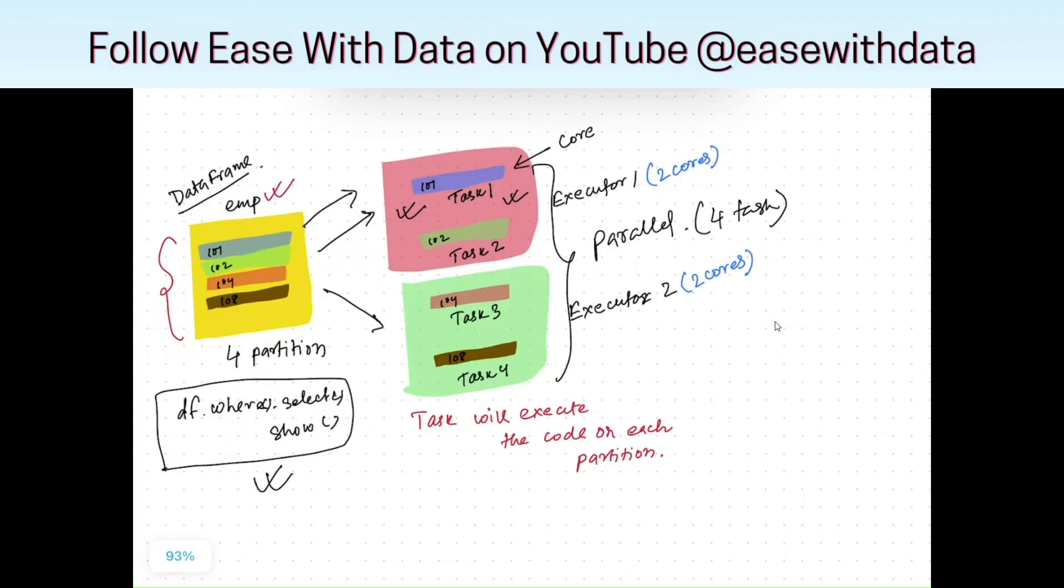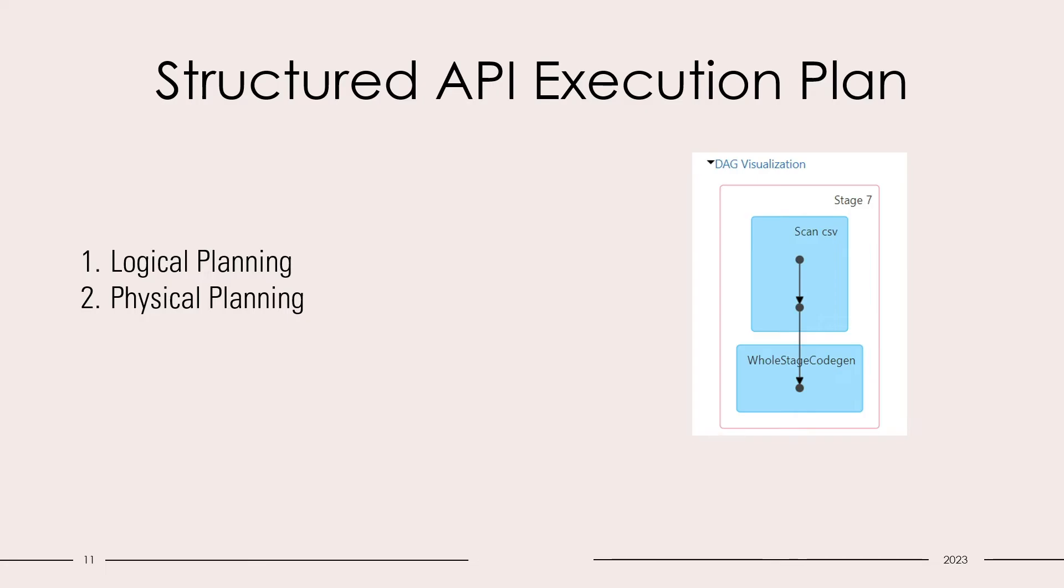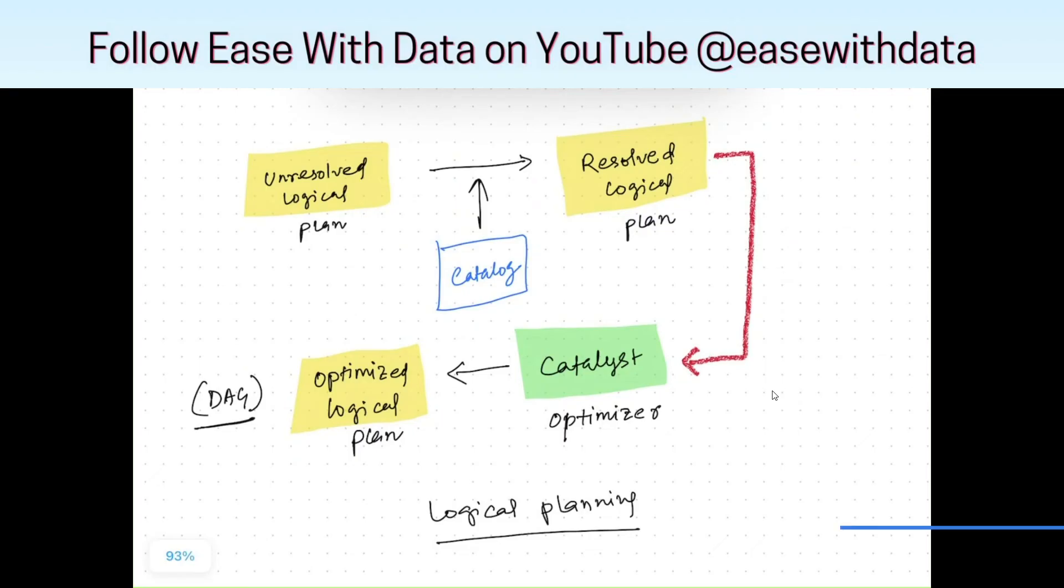Now let's understand how Spark works on planning for the structured APIs. To work on the execution plan for a structured API, Spark basically goes through two planning sessions. One is the logical and second is the physical. On my screen is the logical planning workflow.